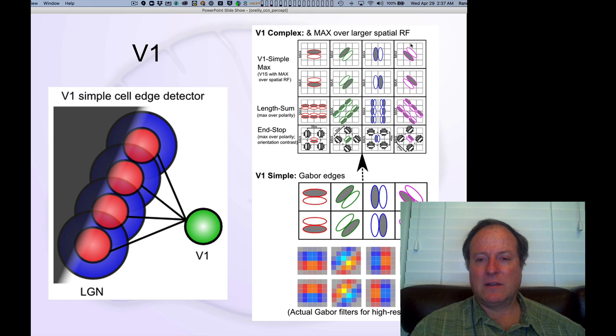And we build this all into our visual system that we use in our models in this chapter so that we don't have to have the system learn it. At least that's in the second part. Initially, we'll see how it learns these kinds of oriented edge detectors from natural visual statistics.